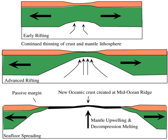Non-volcanic margins are formed when extension is accompanied by little mantle melting and volcanism. Non-volcanic transitional crust consists of stretched and thin continental crust. Non-volcanic margins are typically characterized by continentward-dipping seismic reflectors and low P-wave velocities.